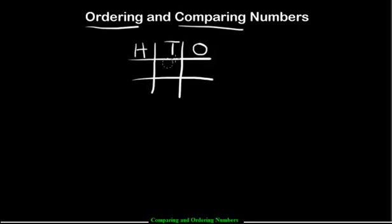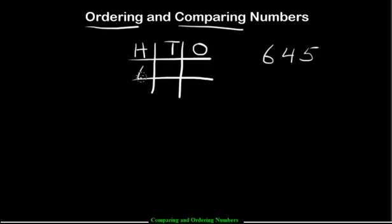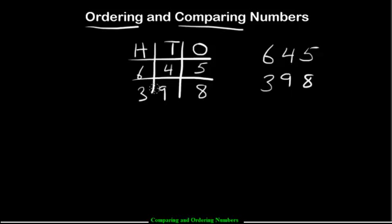The H stands for hundreds, the T for tens, and the O for ones. Now what we'll do is instead of throwing X's and O's on here, we're going to throw digits — numbers. For example, if I gave you the number 645, you would put them in their proper place value: the 6 in the hundreds, the 4 in the tens, and the 5 in the ones. And if I gave you another number like 398, you would likewise take all of those digits and throw them in their place values. So we have our game board set up like that.